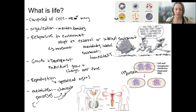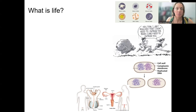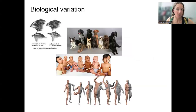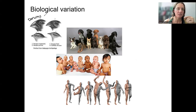One more thing I want to mention is evolution. Evolution is not a requirement for life, but it is a consequence of life. All life over time changes and becomes different, and this is how we get biological variability. You may have heard of biological variation in an intro bio course — thinking about Darwin's finches. Darwin studied biological variation in beak shape of finches, and these different species have different shapes to eat different nuts.